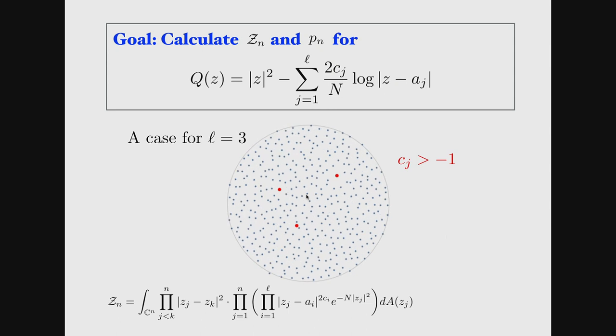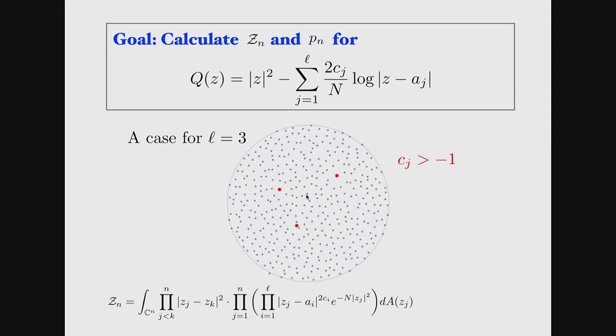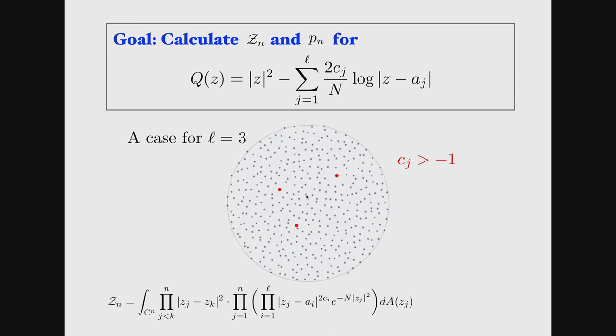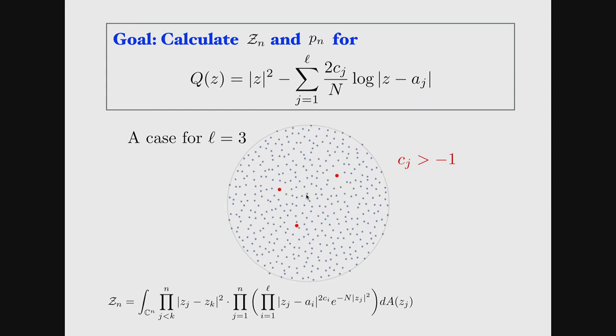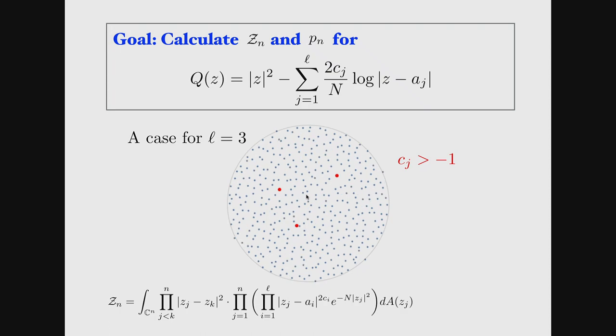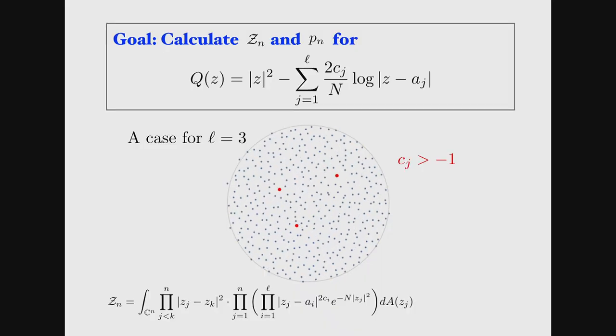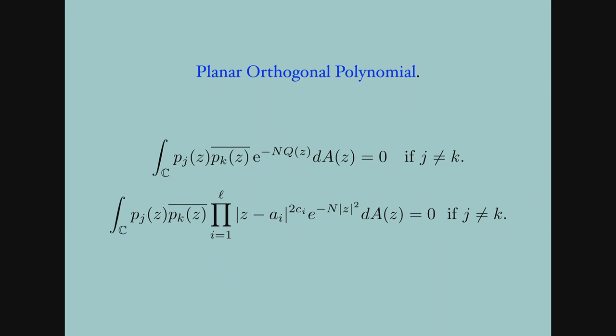For this model, we want to calculate the partition function, which is now explicitly written with interaction terms for all fixed charges. We will look at the average characteristic polynomial. What is known is that this average characteristic polynomial is also an orthogonal polynomial satisfying planar orthogonality with respect to the measure given by the same Q that defines the probability distribution. The orthogonal polynomial can be written more explicitly in this form.